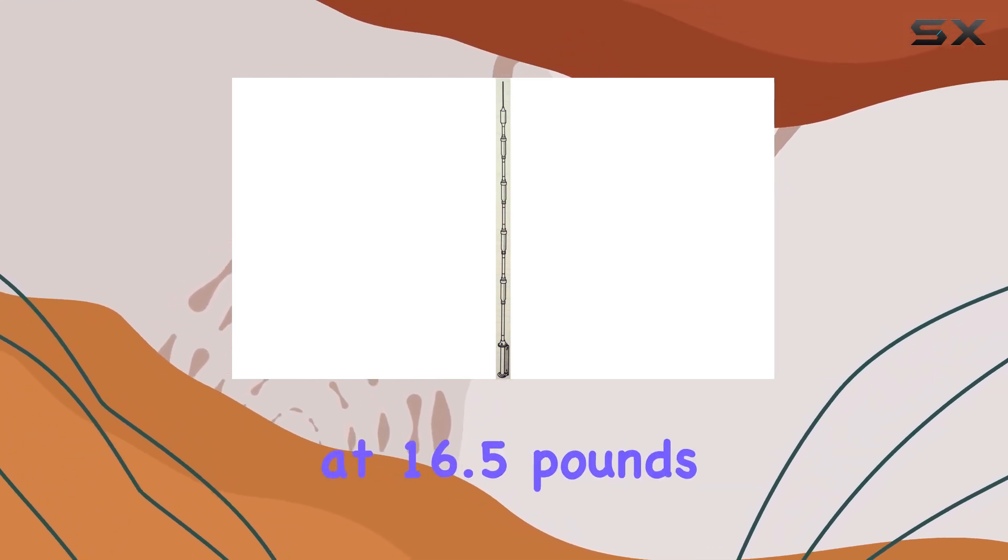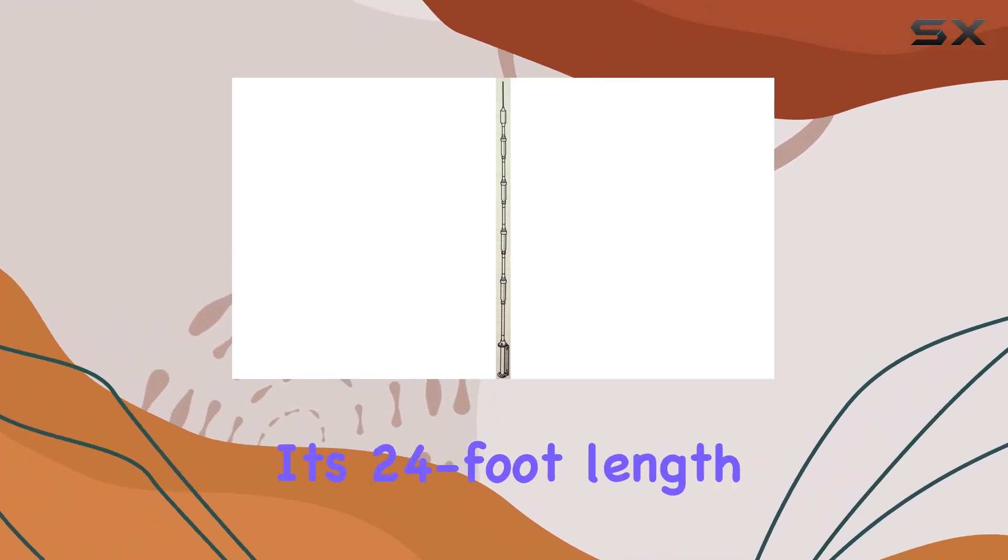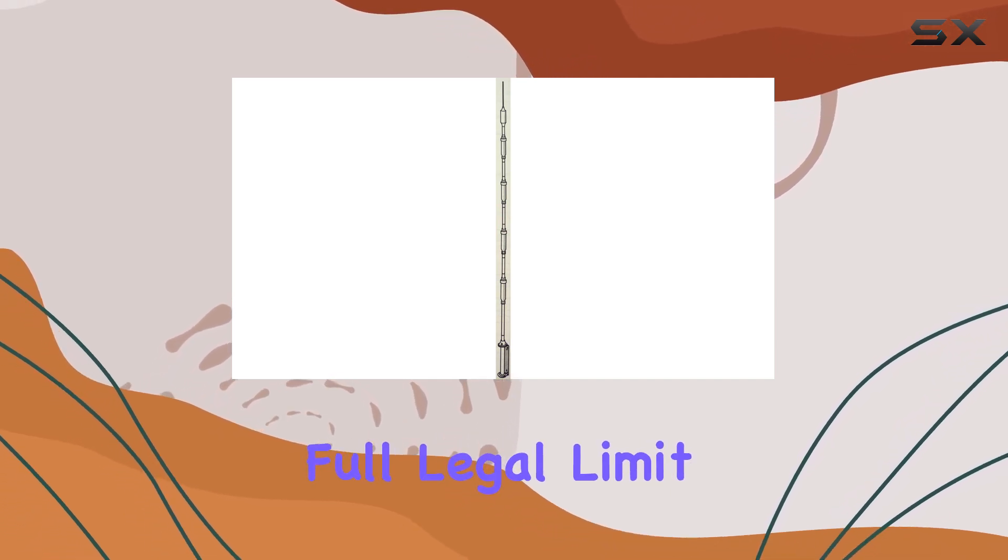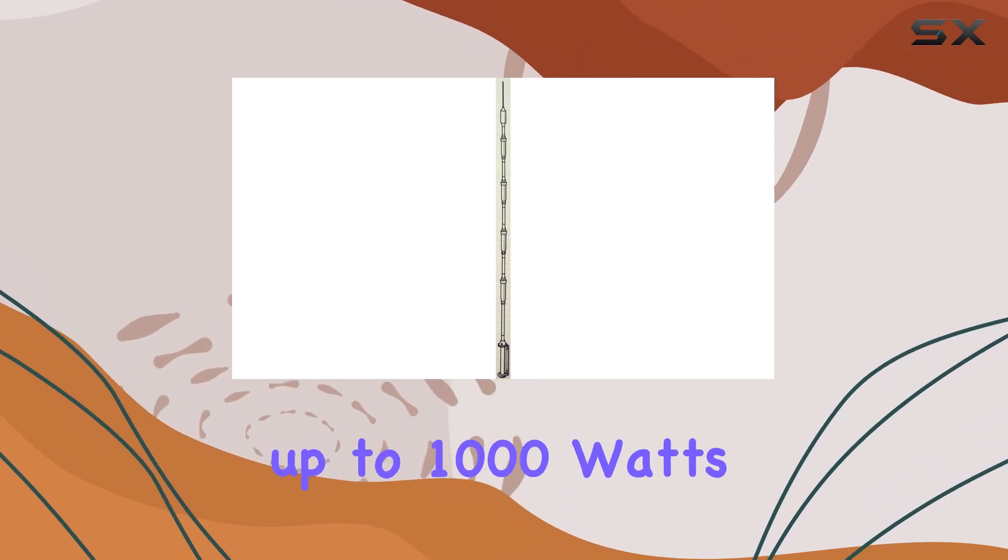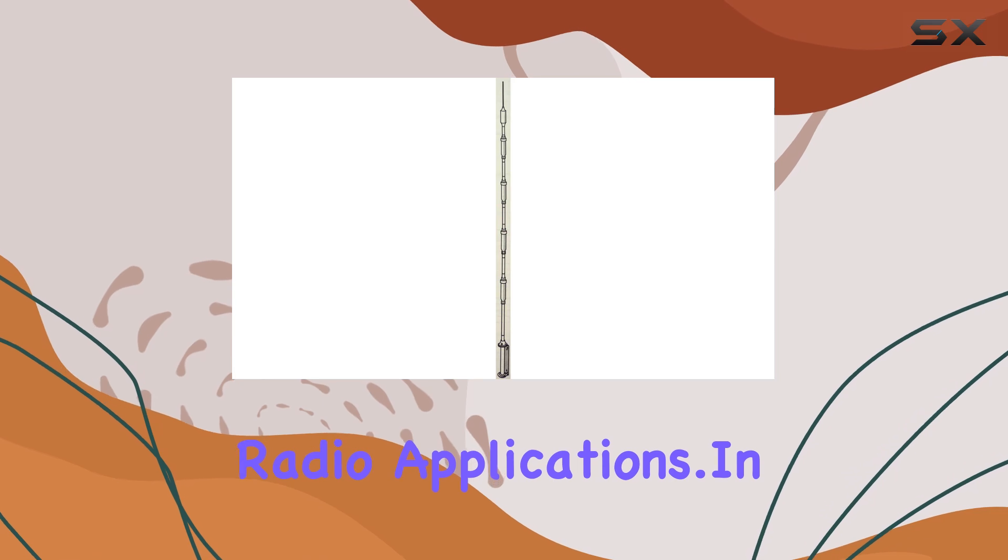Weighing in at 16.5 pounds, this antenna is sturdy but manageable, and its 24-foot length makes it a commanding presence on your property. It's designed to meet the full legal limit for SSB or CW operations, handling up to 1,000 watts, which is more than sufficient for most amateur radio applications.